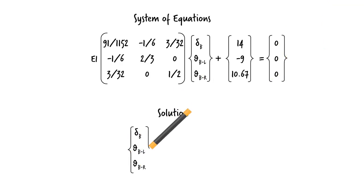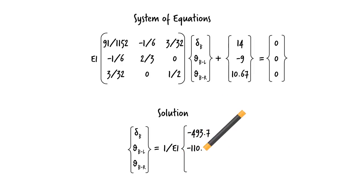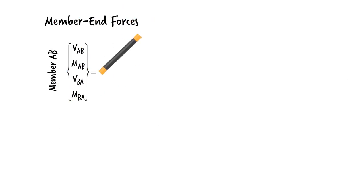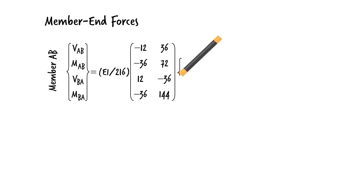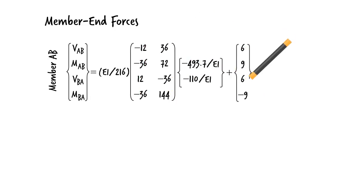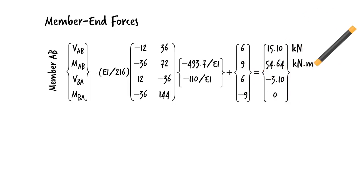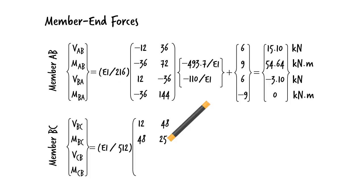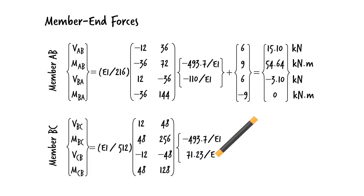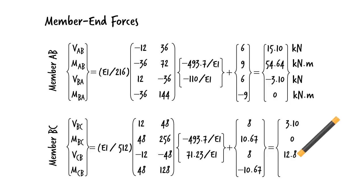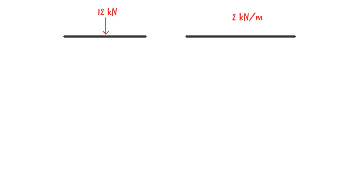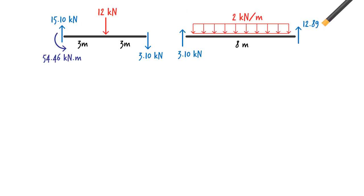Solving the system for the unknowns, we get the solution. Now we determine the member end forces. Here they are for AB and for BC. Knowing the member end forces, we can calculate the support reactions like this.